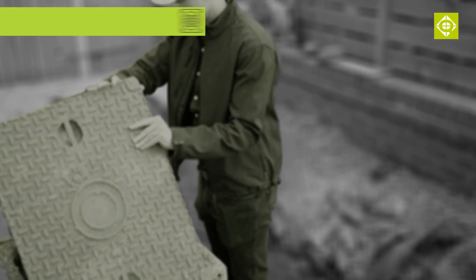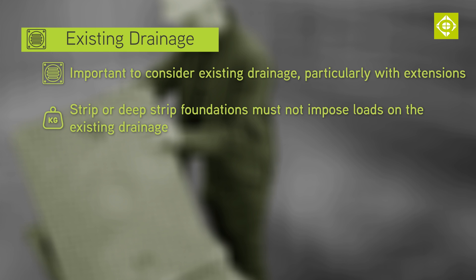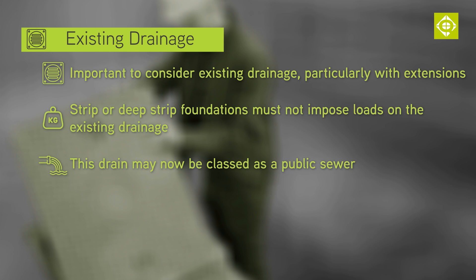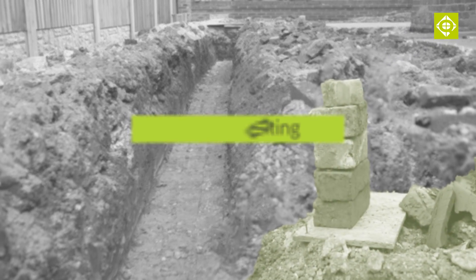Why is it important to consider existing drainage, particularly when building an extension? Essentially two reasons. One: if using a traditional strip or deep strip foundation, these must not impose loads on the existing drainage. Two: it's likely that the drain may now be classed as a public sewer, meaning you should enter into a build over agreement with your local water company. In a few cases, this may even prevent the extension from going ahead.